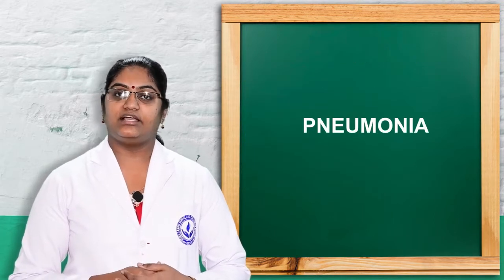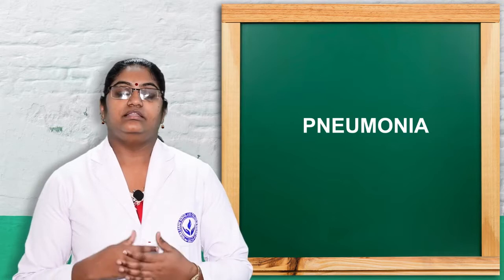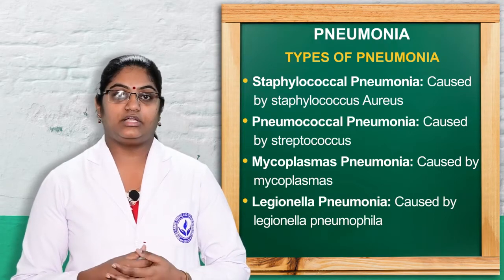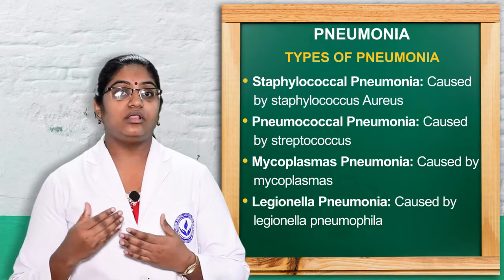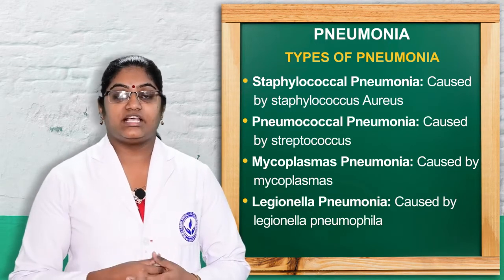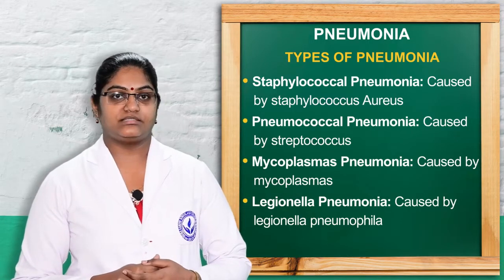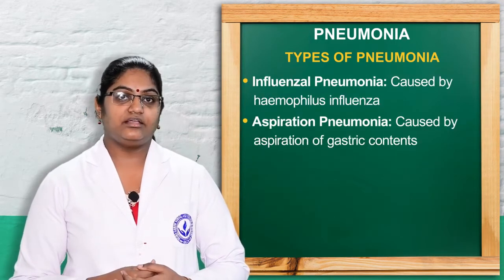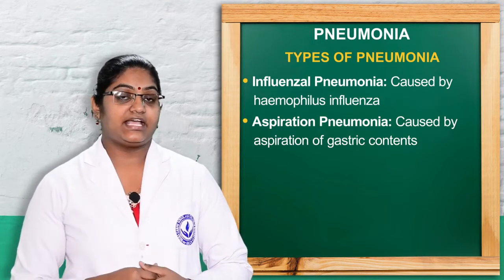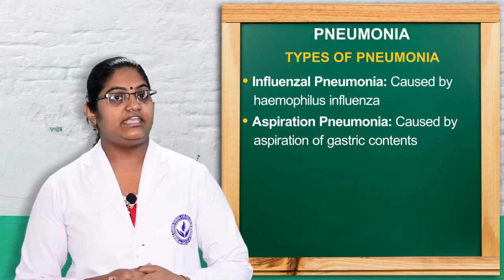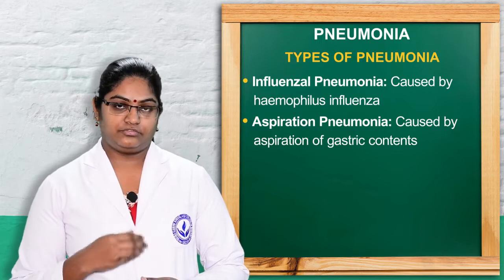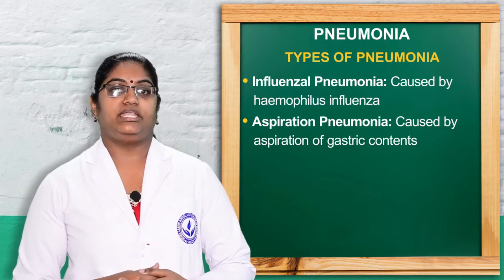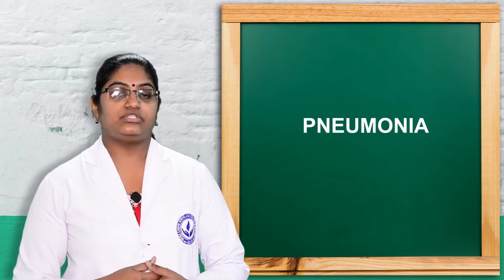Here we can discuss the types of pneumonia. Staphylococcal pneumonia is caused by Staphylococcus aureus. Pneumococcal pneumonia is caused by Pneumococcus or Streptococcal. Mycoplasma pneumonia is caused by Mycoplasma. Legionella pneumonia is caused by Legionella. Viral pneumonia is caused by influenza. And aspiration pneumonia is caused by gastric contents such as food or fluids being aspirated into the lungs.